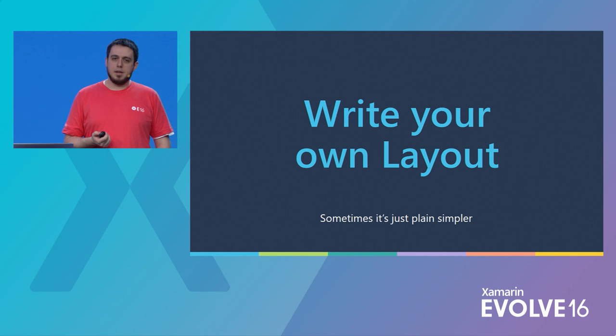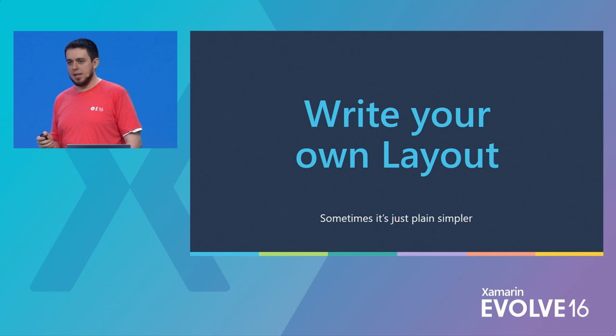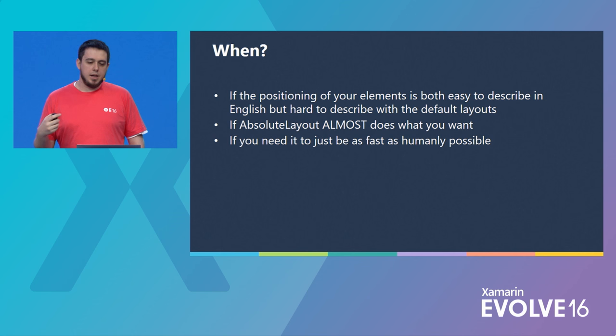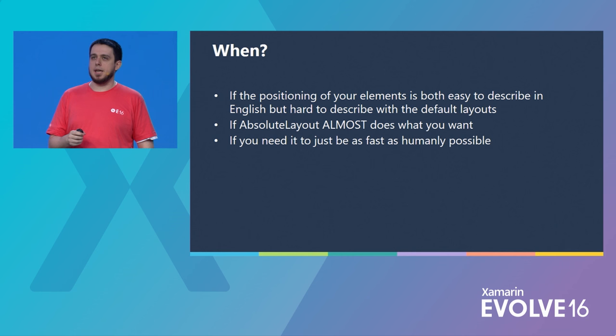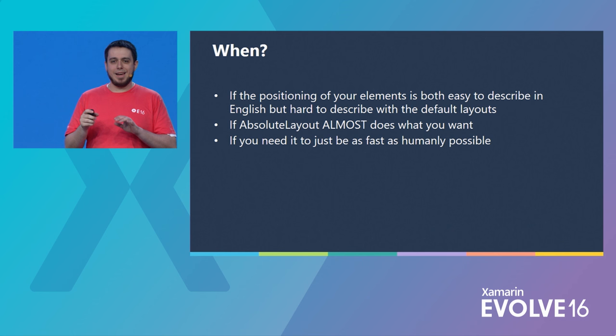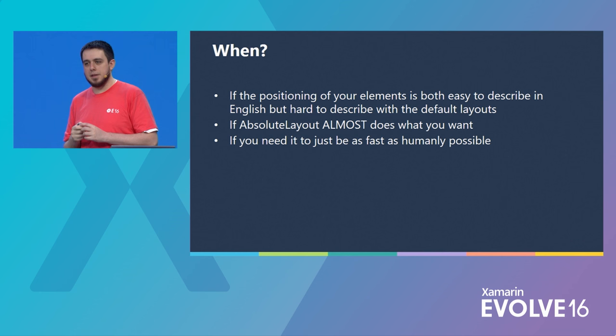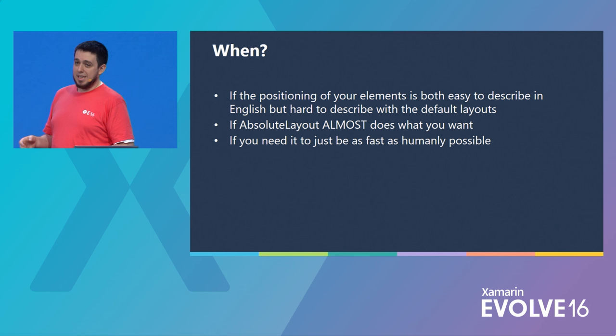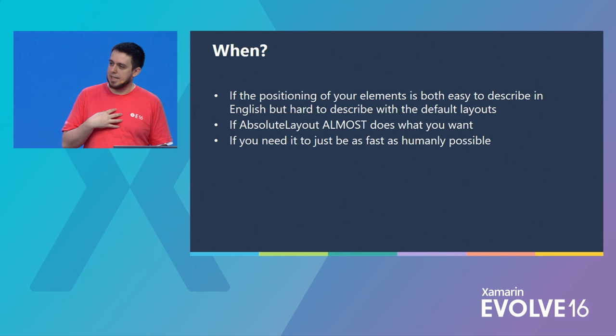Writing your own layout is just plain simpler a lot of the time. If you find yourself using absolute layout, you're probably a prime candidate. When should you do this? If you have a situation where you can describe the layout you want easily in English to a coworker, but you're having a very hard time describing it in the layouts we've given you — you're a prime candidate for a custom layout. Or if absolute layout is almost doing what you want but not quite, or if you really just need it to be as fast as humanly possible, you know things about your layout that the framework contextually doesn't, so you can short-circuit a lot of the math.